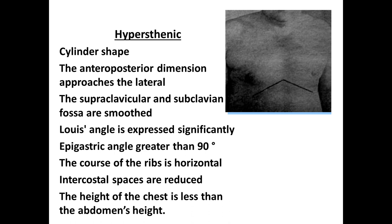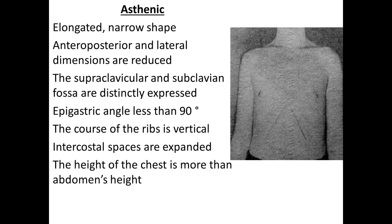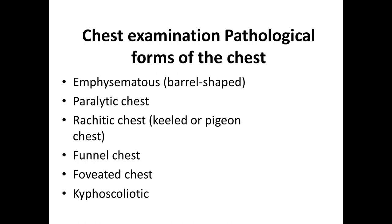Hypersthenic type has a cylindrical shape; the anteroposterior dimension approaches the lateral; supraclavicular and subclavian fossae are smooth; the Louis angle is expressed significantly; the epigastric angle is greater than 90 degrees; course of ribs is horizontal; intercostal spaces are reduced; height of chest is less than abdominal height. Asthenic type has an elongated narrow shape; anteroposterior and lateral dimensions are reduced; supraclavicular and subclavian fossae are distinctly expressed; the epigastric angle is less than 90 degrees; slope of ribs is vertical; intercostal spaces are expanded; height of chest is more than abdominal height.